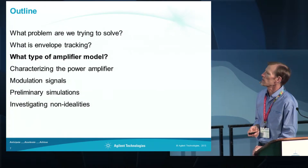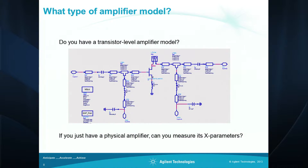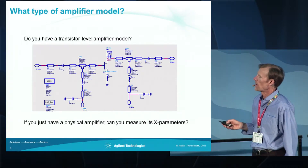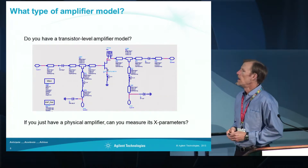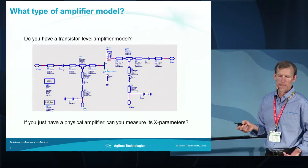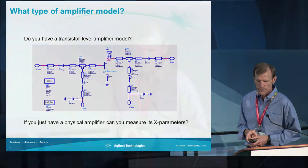The types of amplifier models we can deal with: the simplest case is a transistor-level amplifier in ADS. You can run harmonic balance simulations, adjust the drain bias, and simulate envelope tracking fairly easily. But if you don't have a model — maybe you're a system integrator buying an amplifier off the shelf — you can measure its X-parameters and apply envelope tracking to an X-parameter model of the PA. We actually have an example of that in our booth.